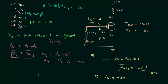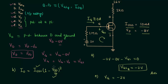Now we calculate the drain current ID. The drain current is given by Shockley's equation: ID equals IDSS times (1 minus VGS divided by VP) squared. From the network, IDSS equals 10 milliamps and the pinch-off voltage VP equals minus eight volts. Substituting VGS equals minus two volts, the drain current equals 5.625 milliamps.